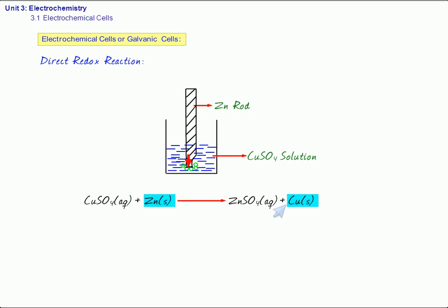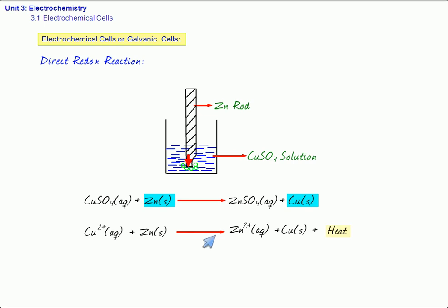The overall reaction is: Cu²⁺ from copper sulfate, when zinc is added, gives Zn²⁺ plus Cu solid, and heat. This solution becomes very hot. So the chemical energy is converted into heat energy.